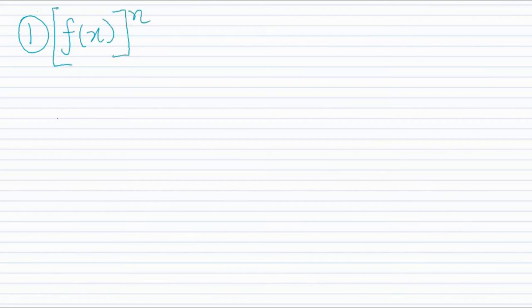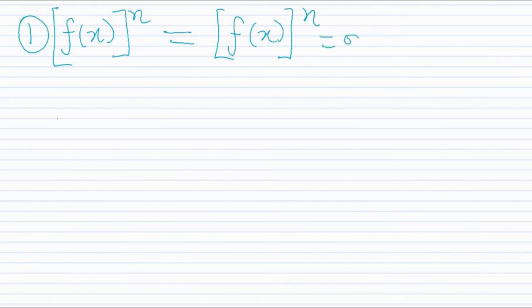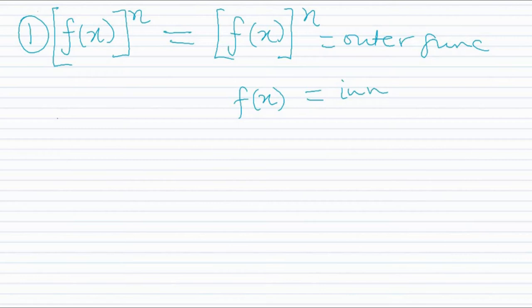Episode 1 focused on one form a function can take, and Episode 2 is going to be about the second form. Episode 1 taught you how to solve a function that takes the form f(x) raised to the power of n. I went into detail on how to derive a function taking this form using the chain rule, which is the derivative of the outer function times the derivative of the inner function.